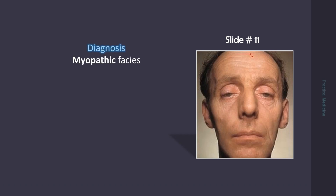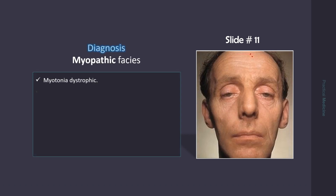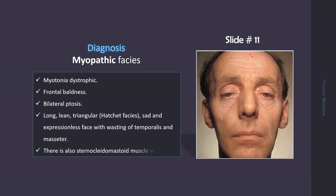This is myotonic dystrophy, and the appearance is myopathic facies, characterized by frontal baldness, bilateral ptosis, long, lean, triangular, sad and expressionless face, with wasting of the temporalis muscles.